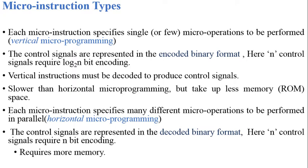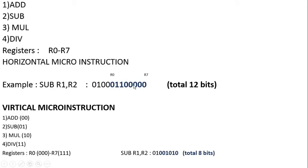To understand this topic in detail, consider an example. Suppose our system can perform four different operations: add, subtraction, multiplication, and division. Also, our system consists of eight different registers named R0, R1, R2 up to R7. Suppose we want to perform an operation like subtraction of R1 and R2 — meaning R1 minus R2 — and store the result back into register R1. How can we represent this in a horizontal micro instruction format?